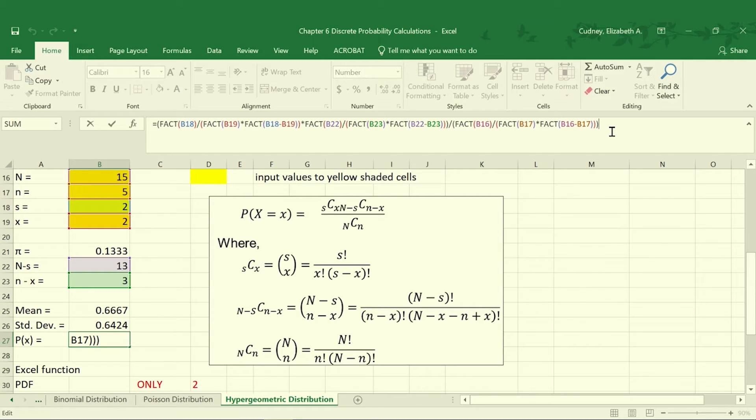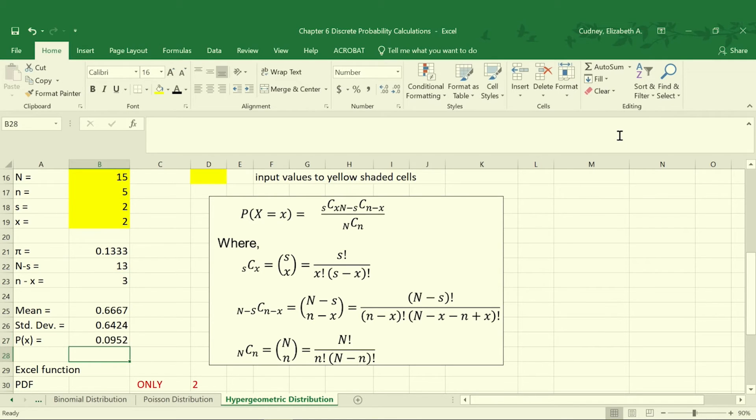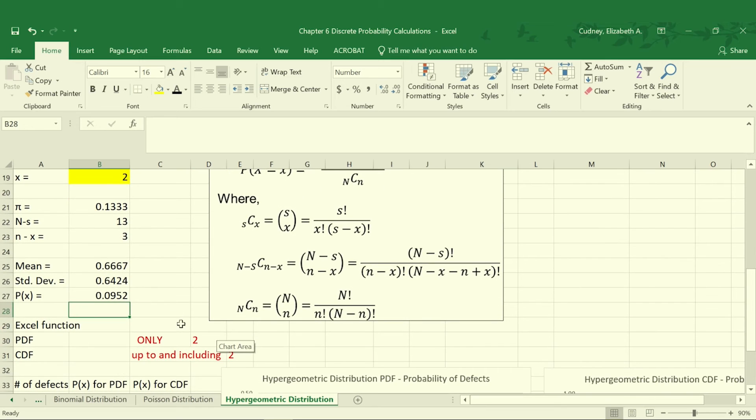This is essentially calculating, based on all of that information, the probability that we will have exactly two defects, given what we know in the past, that 2 out of 15 have been defective, and now I'm going to pull 5 in my small sample size, and I want to know that 2 in that 5 are defective.